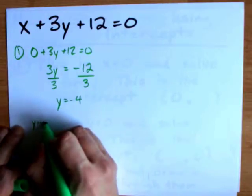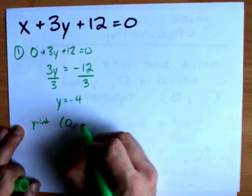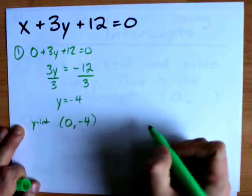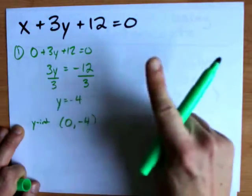That means that my y-intercept is going to be at (0, -4), and I will plot that on a grid very soon.